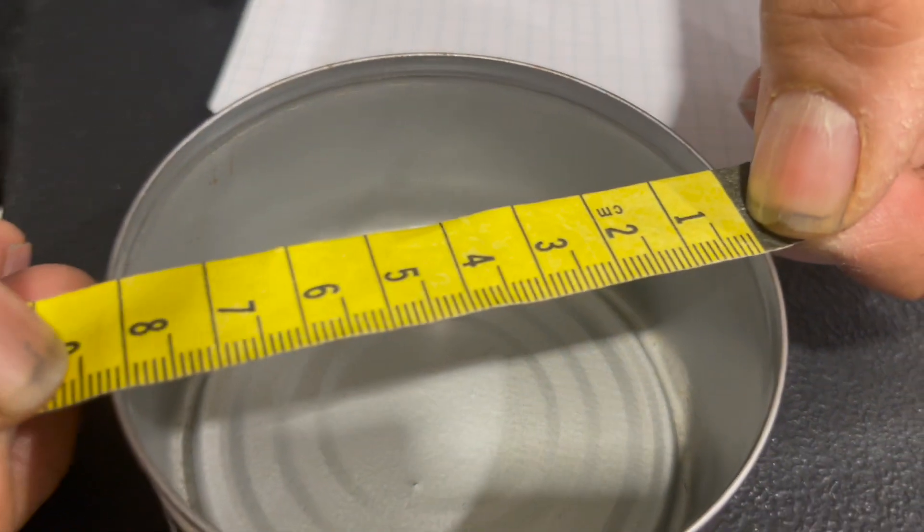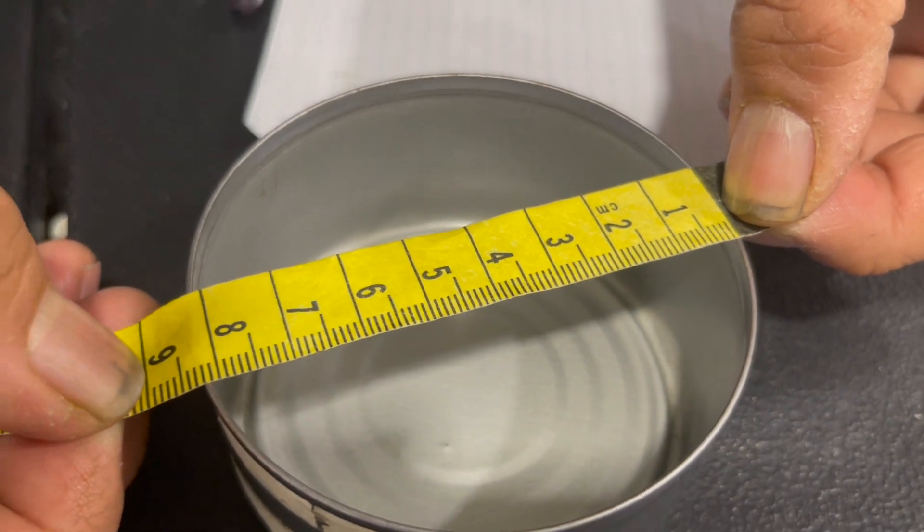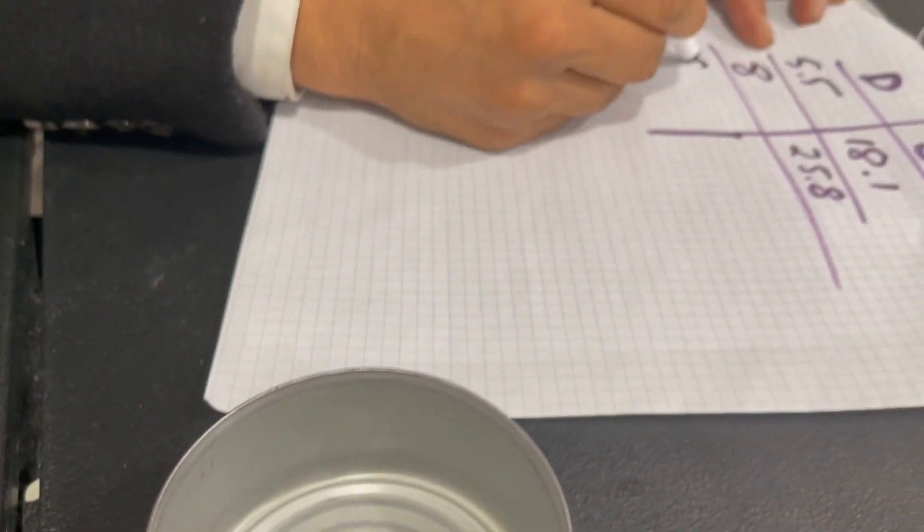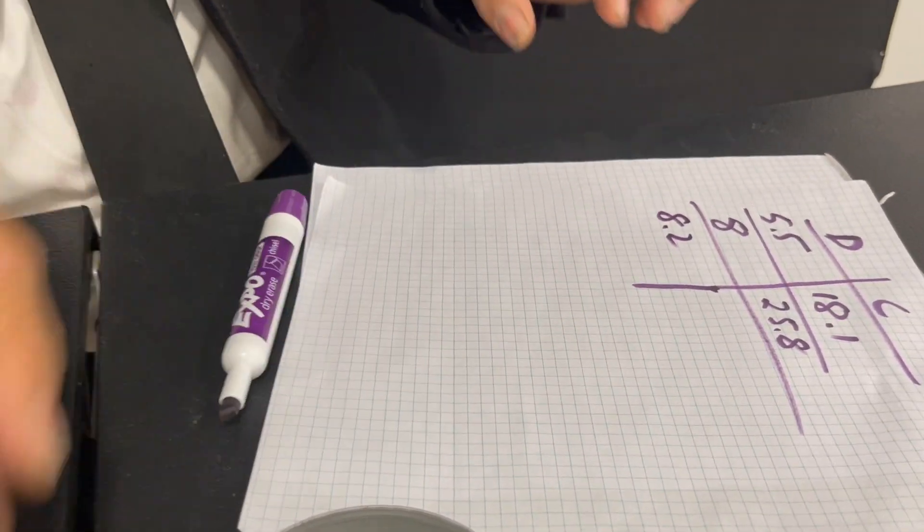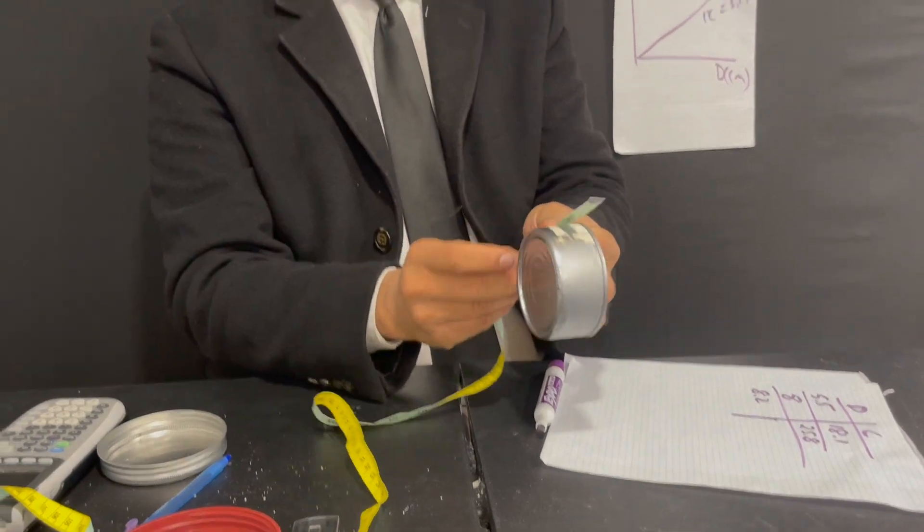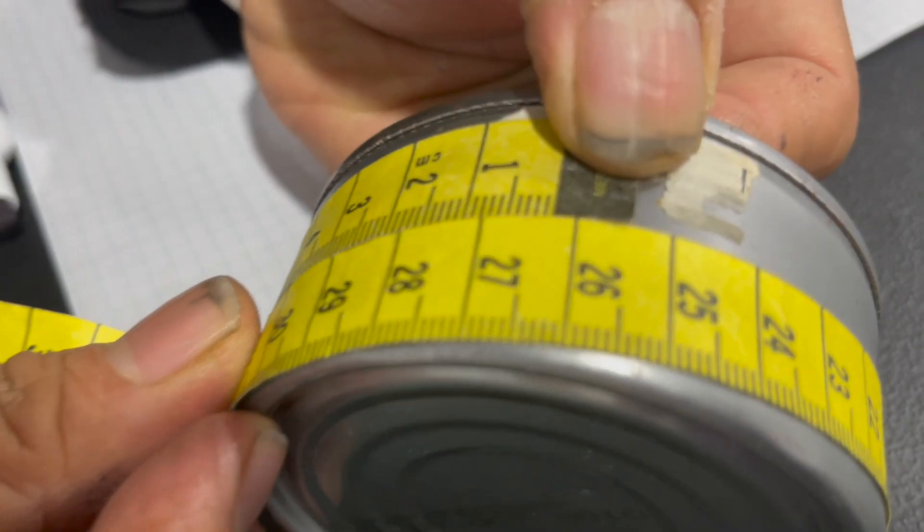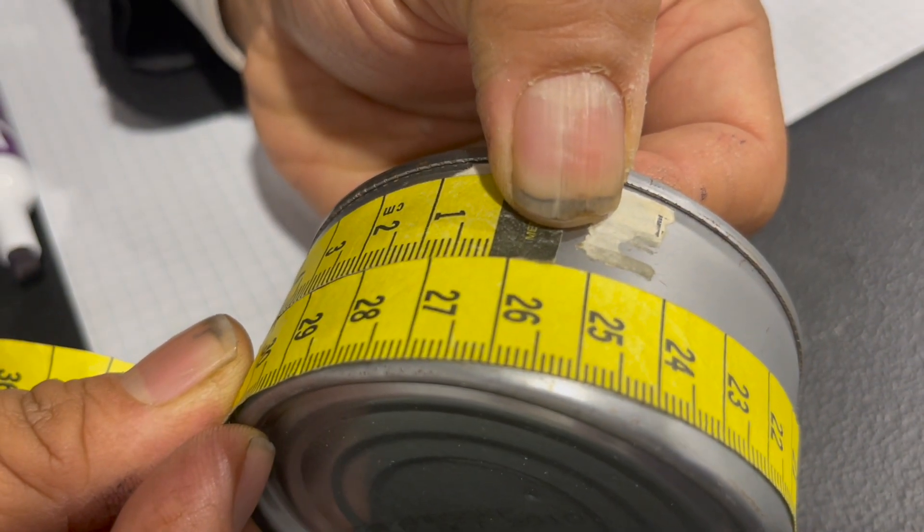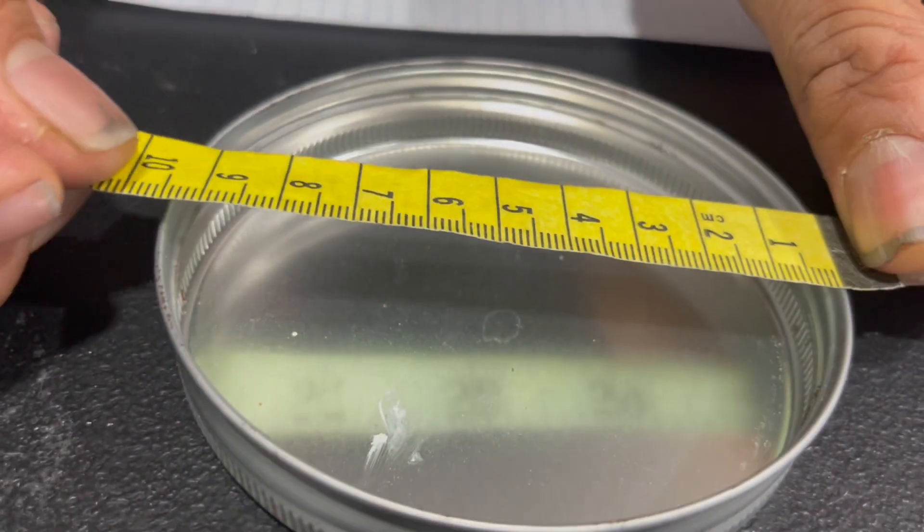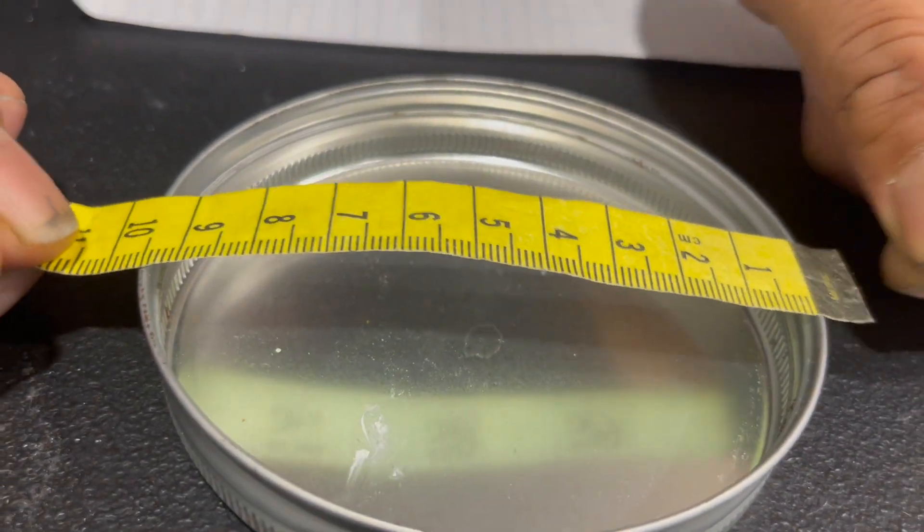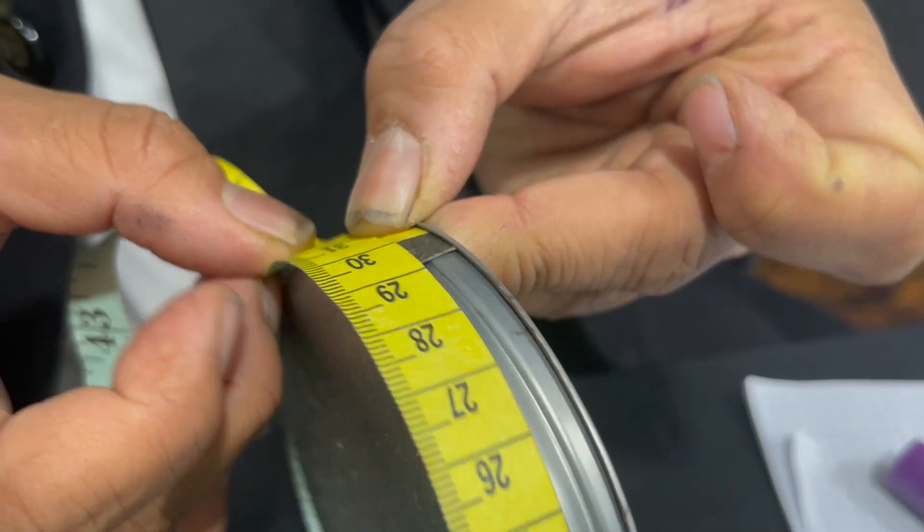So the diameter of this one would be 8.2. A little bigger of course. So the circumference has to be a little bigger. 26.4. Next big one would be diameter would be, let's see, 9.5. Oh wow almost a whole number 30.